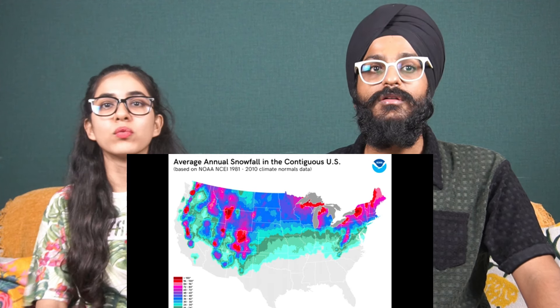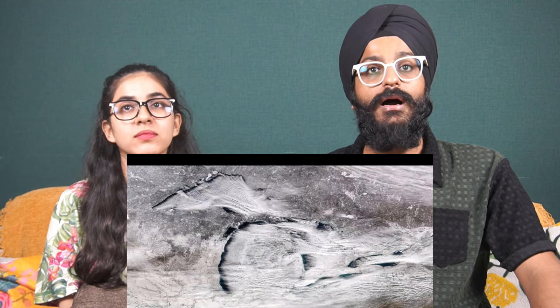Farther north, temperatures get colder and precipitation increasingly falls as snow, but not all northern areas are the same. Winters in the northern Great Plains are colder than New England winters even at the same latitude, because cold polar air masses stream straight down from Canada into the Midwest with very high winds, even without much snowfall. The Northeast is more moderated by ocean influence, so Maine or Massachusetts don't get quite as cold as Minnesota or North Dakota. However, the Northeast does get considerably more snow.